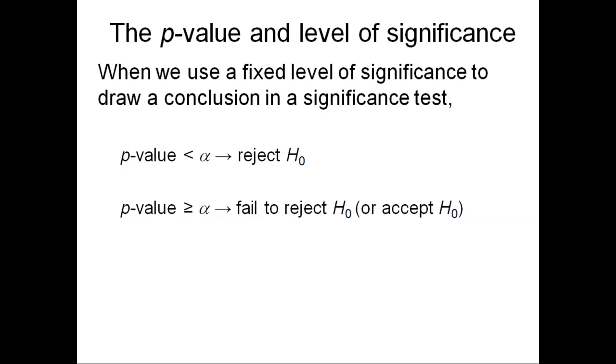Here's how the p-value relates to our level of significance. If the p-value is less than the value alpha we set, then we reject the null hypothesis. If the p-value is greater than or equal to alpha, we fail to reject the null hypothesis, or in other words, we accept the null hypothesis. This is why it's so important to set the level of significance alpha before we test our statistical data.